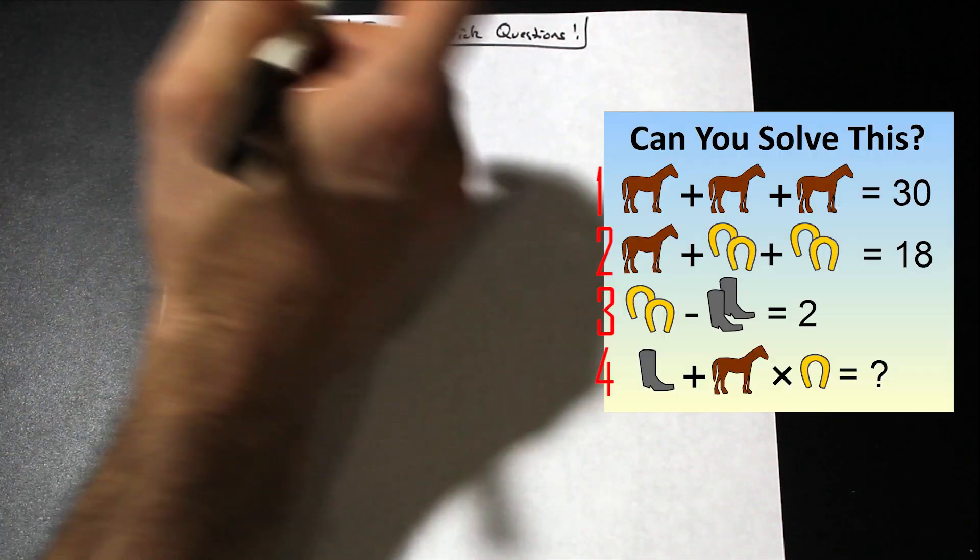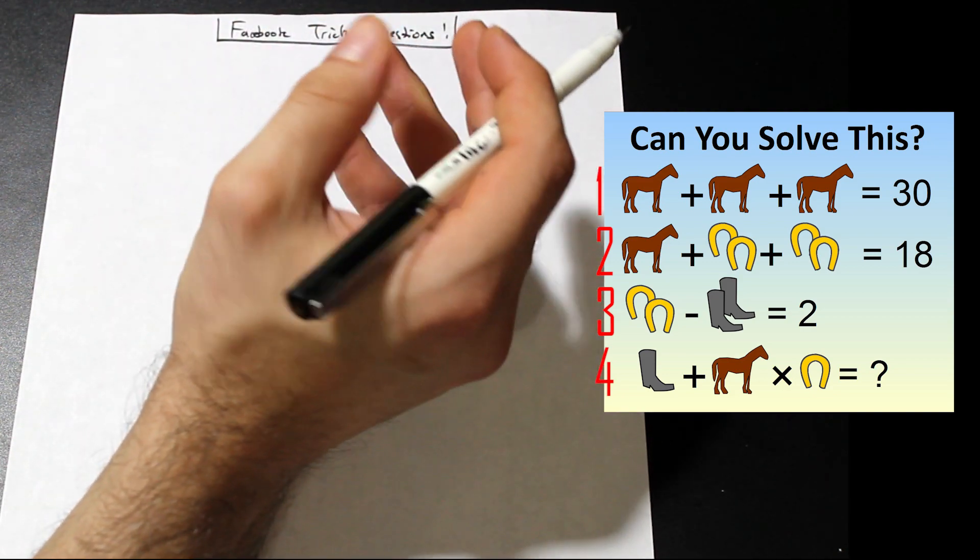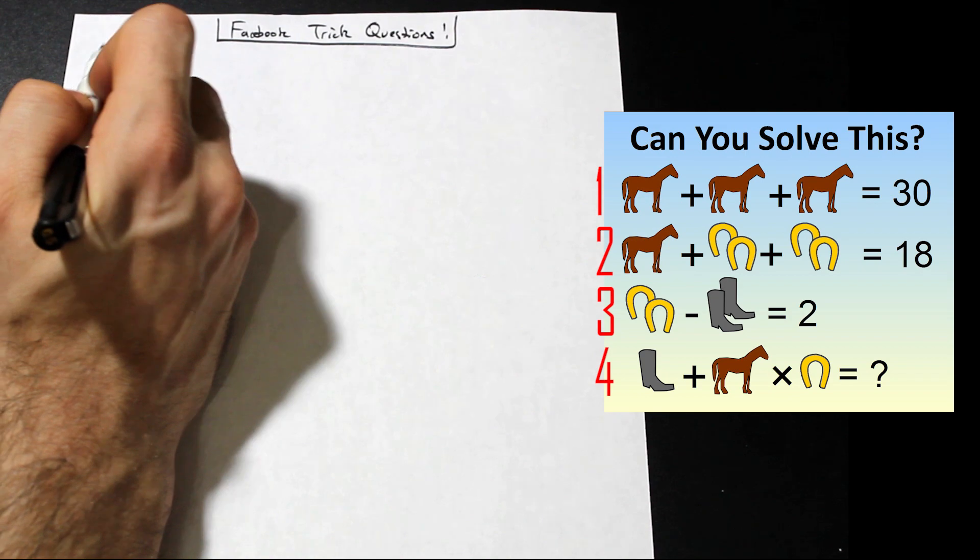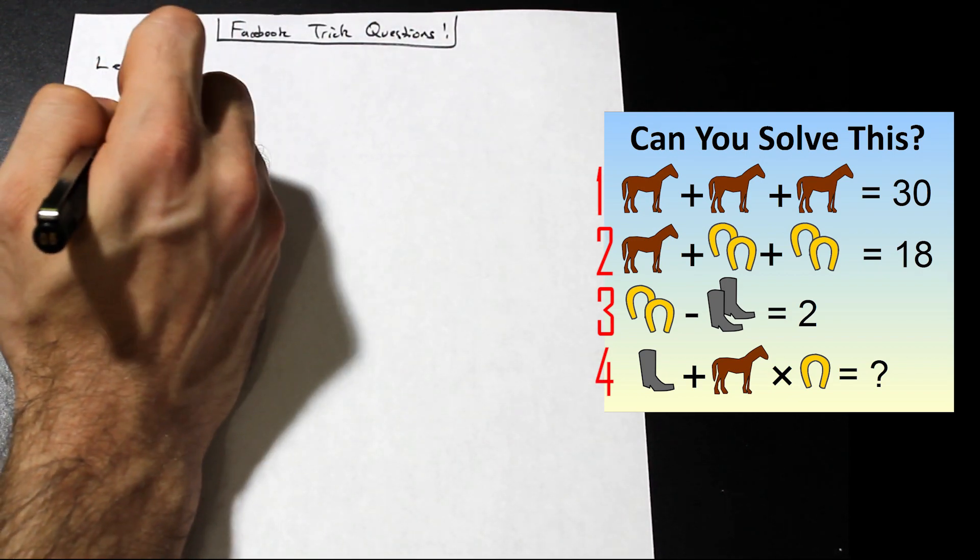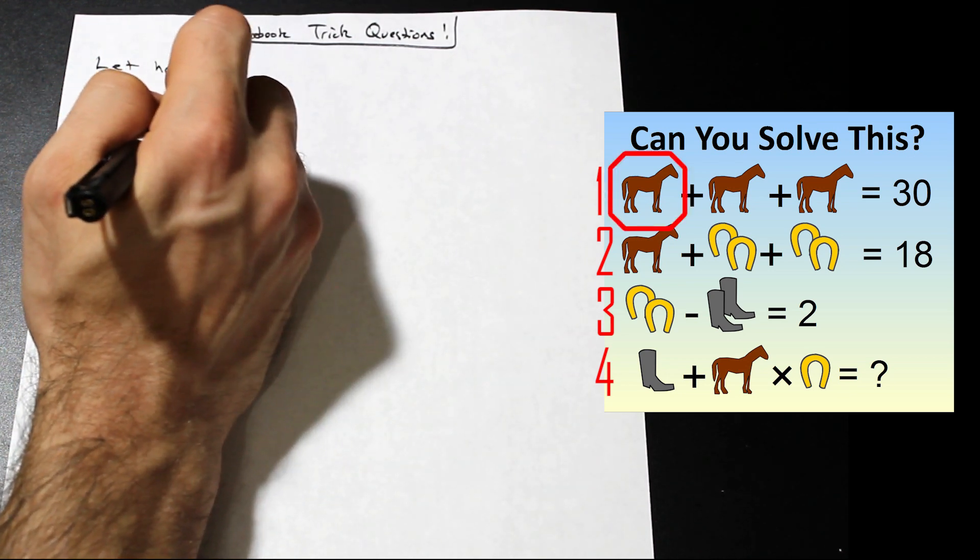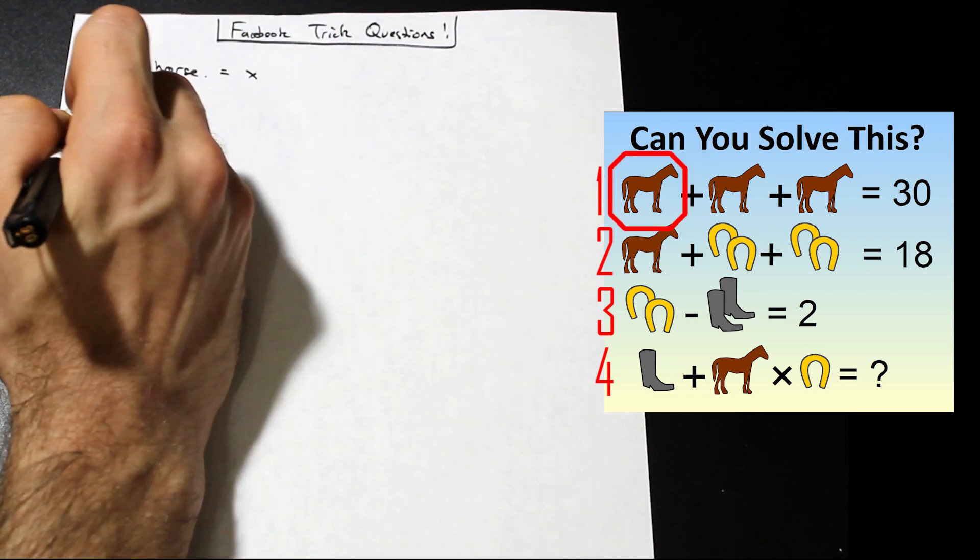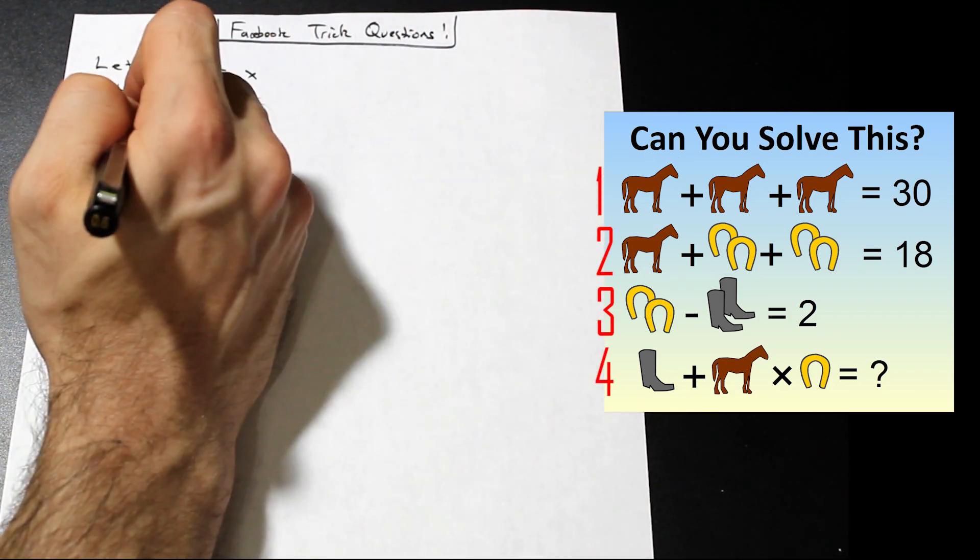Let's go ahead and get started. So the first step is to assign variables to each little symbol that we have. So we're going to assign X, Y, and Z. Okay, so let's let, for example, horse. So we're going to let one horse equal X. You can assign any variable letter that you want. It doesn't matter. I like using X, Y, Z.